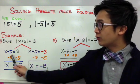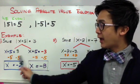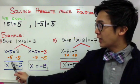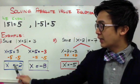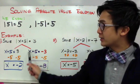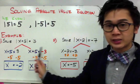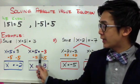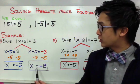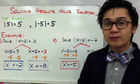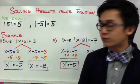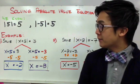Solving for x in the first equation, we subtract 5 on both sides and get x equal to negative 2. For the second equation, x plus 5 equal to negative 3, x will equal to negative 8. So we have two values of x for our absolute value equation.